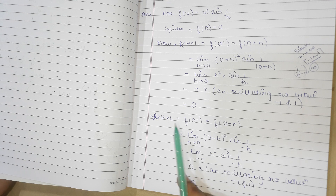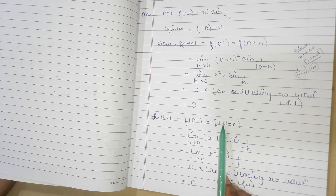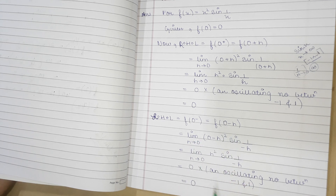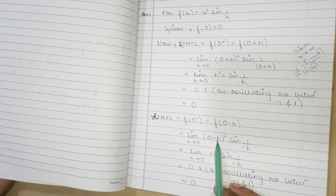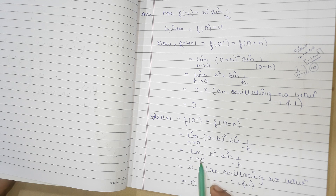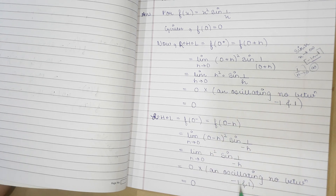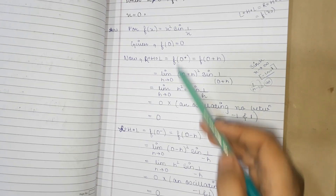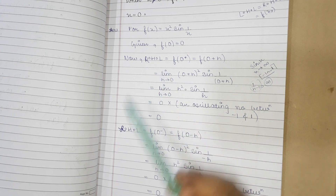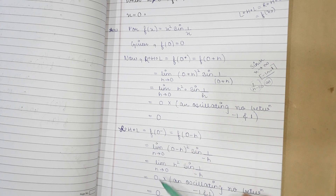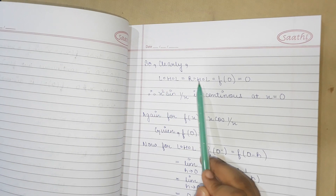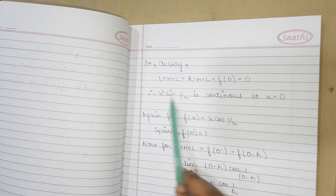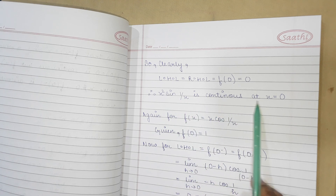Now for LHL, f(0−) means we substitute 0 − h. So LHL = limit h→0 of (0−h)²·sin(1/(−h)) = limit h→0 of h²·sin(−1/h). Again, h² → 0 and sin(−1/h) oscillates between −1 and 1, so this equals 0 multiplied by an oscillating number, which is 0. Clearly, LHL = RHL = f(0) = 0, so x²·sin(1/x) is continuous at x = 0.